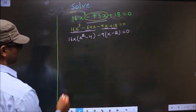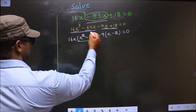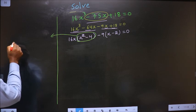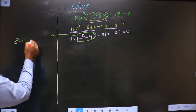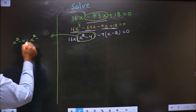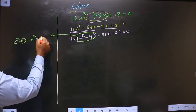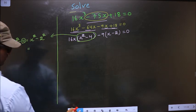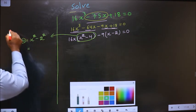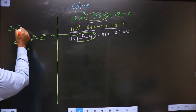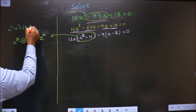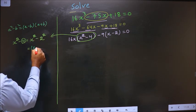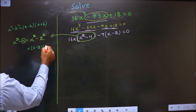Now x squared minus 4 I will simplify. x squared minus 4 is nothing but x squared minus 2 squared. I changed 4 to 2 squared because now I can apply the formula a squared minus b squared equals a minus b times a plus b. So we get x minus 2 times x plus 2.